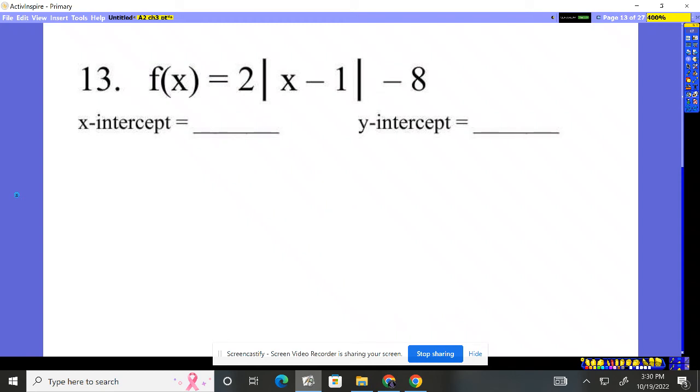Problem 13. Absolute value. Find the x-intercept and the y-intercept. What do we know is true? Well, here's what I know. If I'm on the x-axis, if I'm crossing the x-axis, I don't know how much I've moved over, but I do know the height is what? Zero.